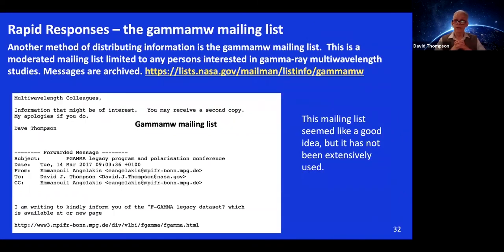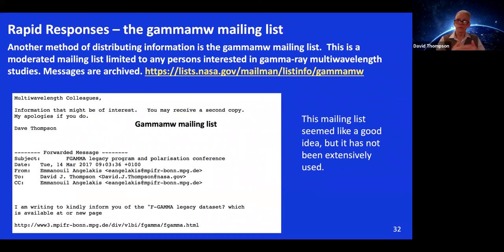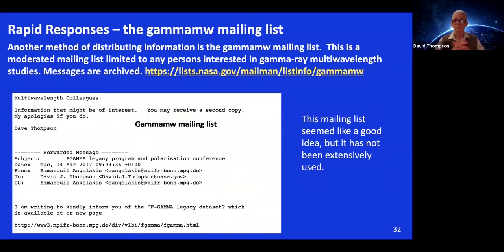We also tried something called the Gamma-MW mailing list — a moderated, archived mailing list where you have to sign up and messages are archived. It seemed like a good idea, prompted by a multi-wavelength meeting with a suggestion from the VERITAS group. It still exists, but it has not been extensively used. Nevertheless, because it's a moderated list, it avoids the spam that creeps into many mailing lists.